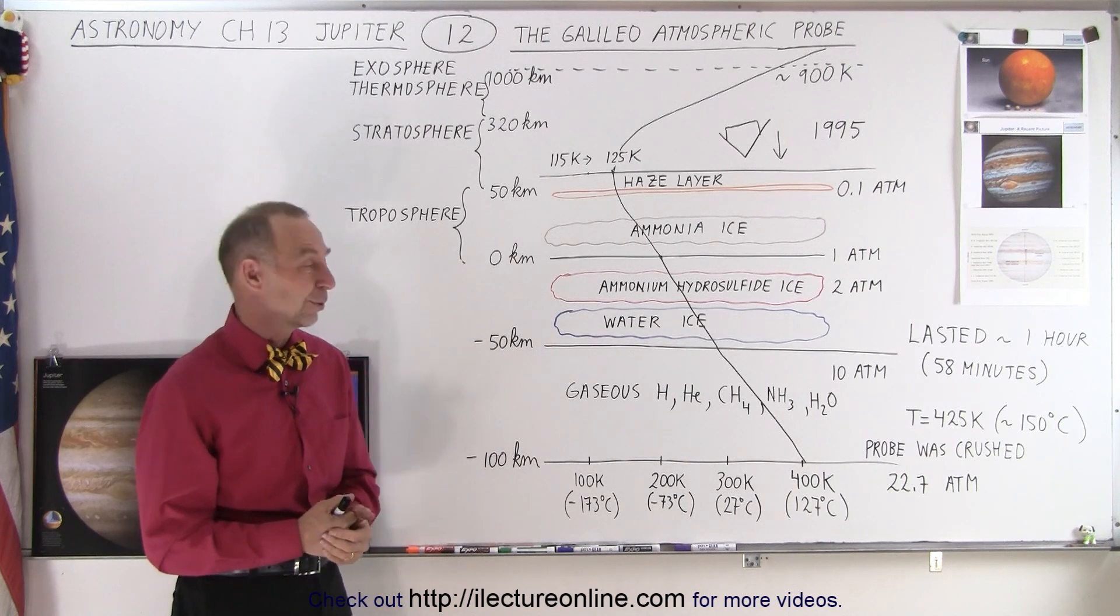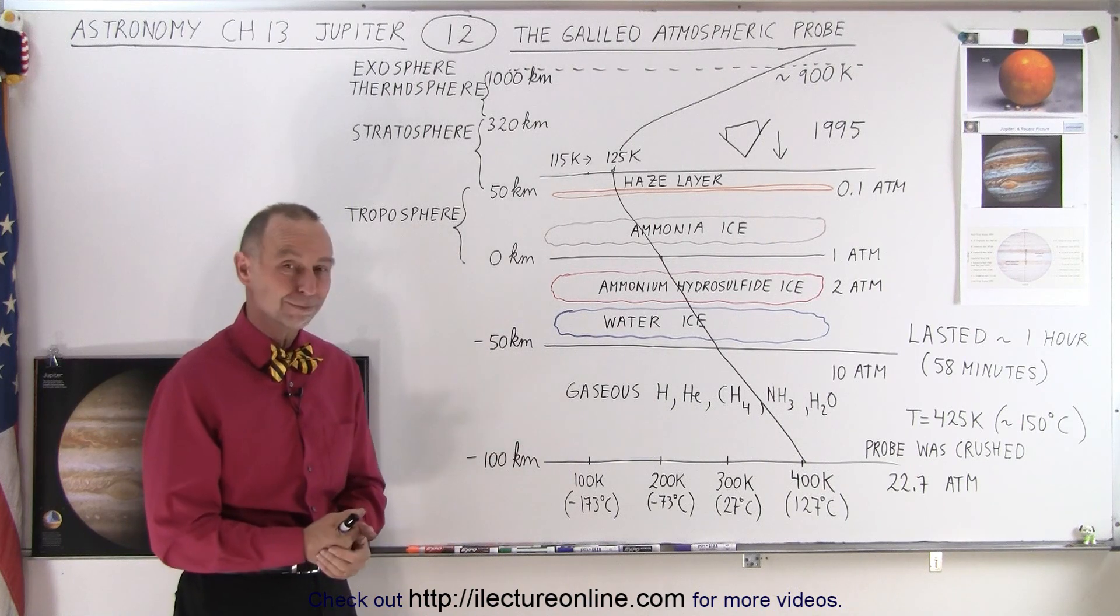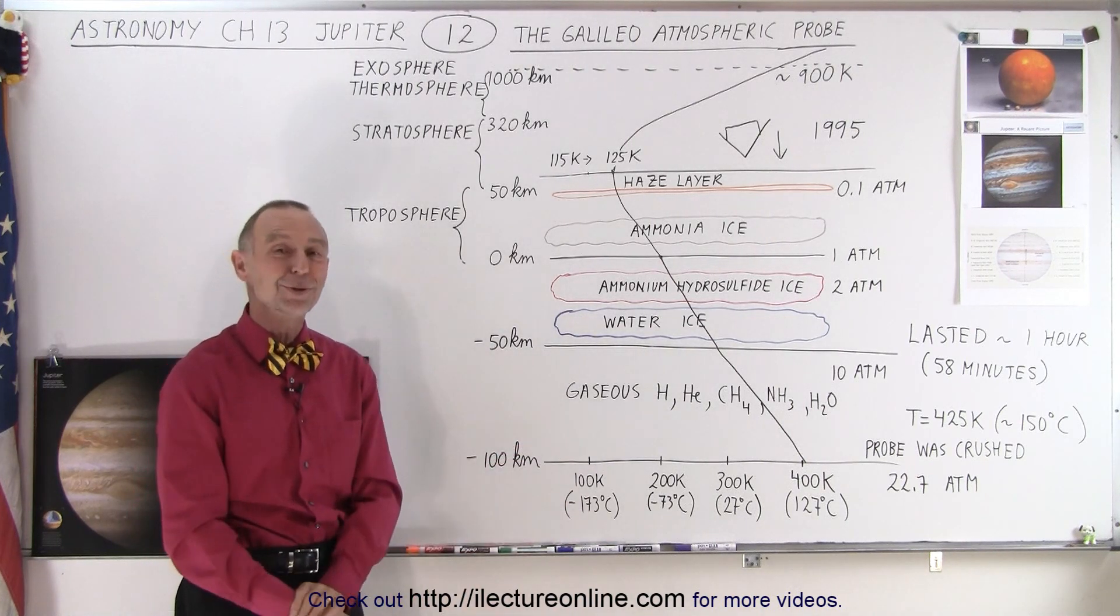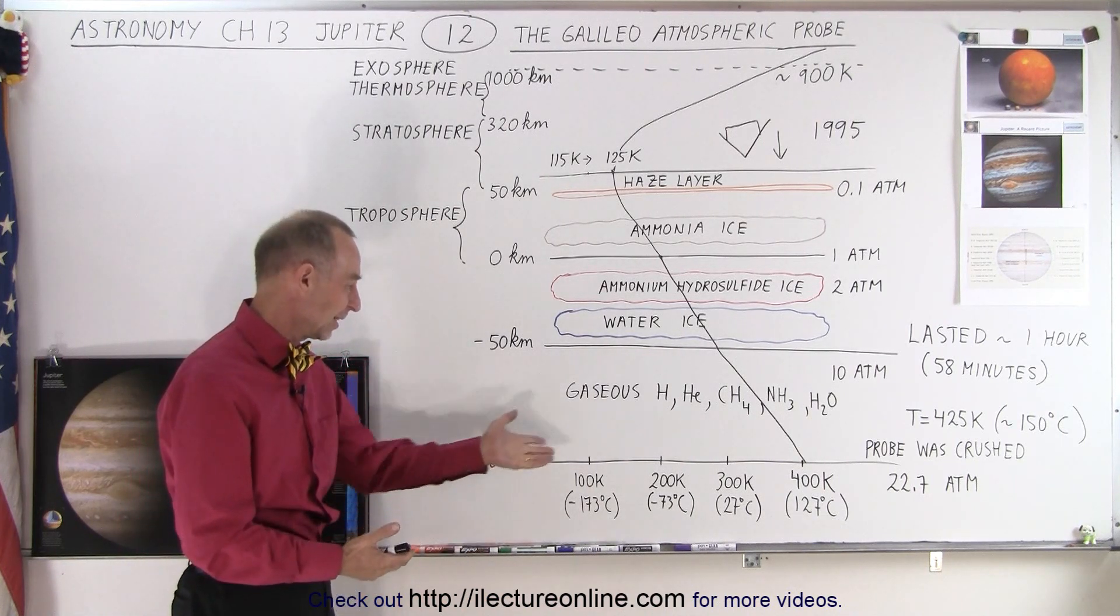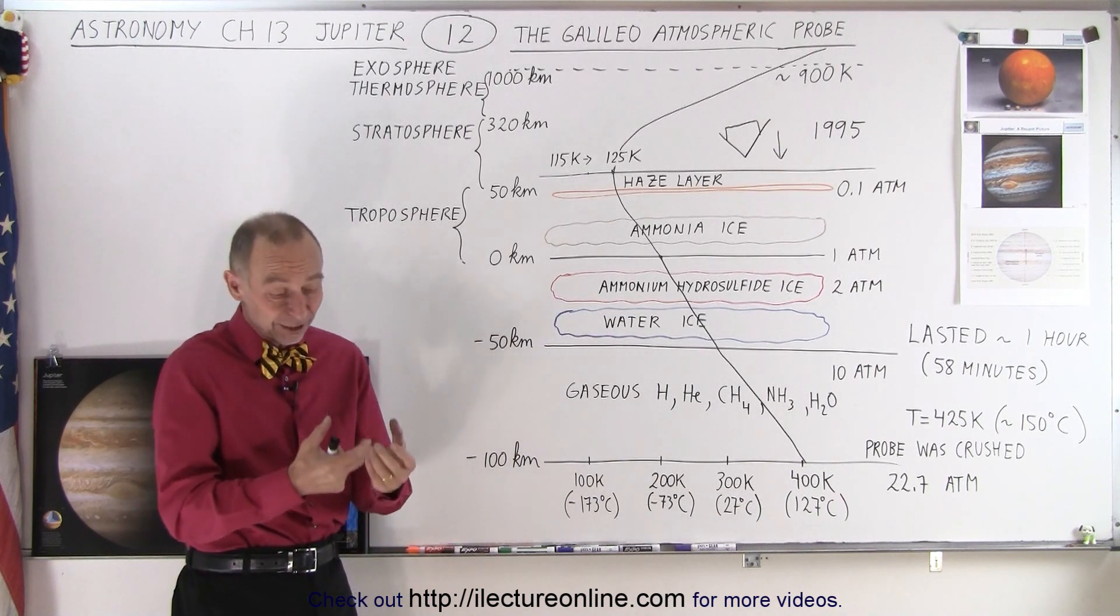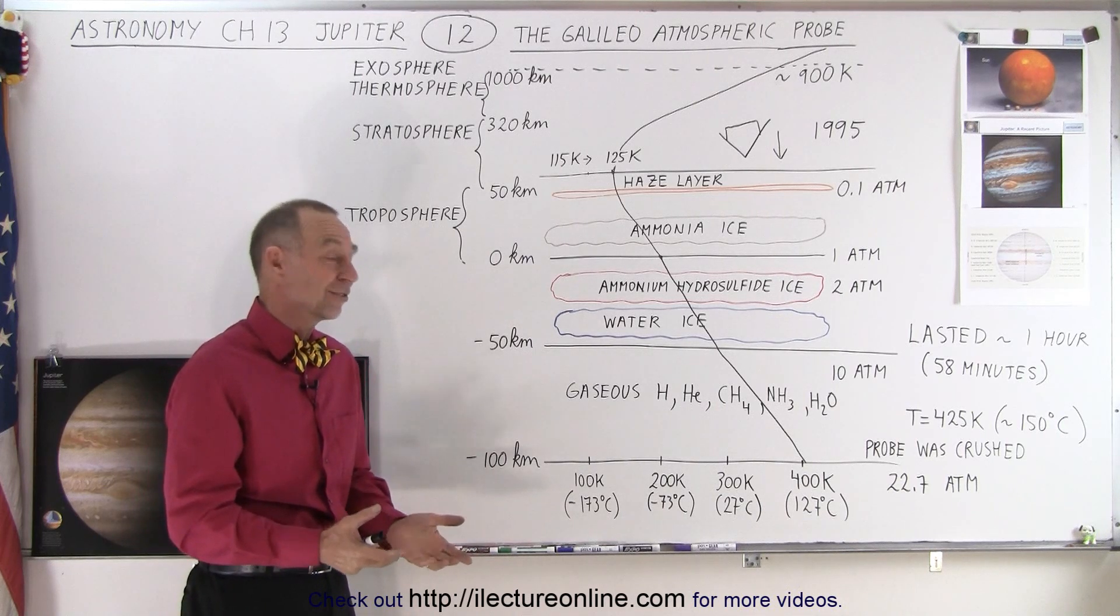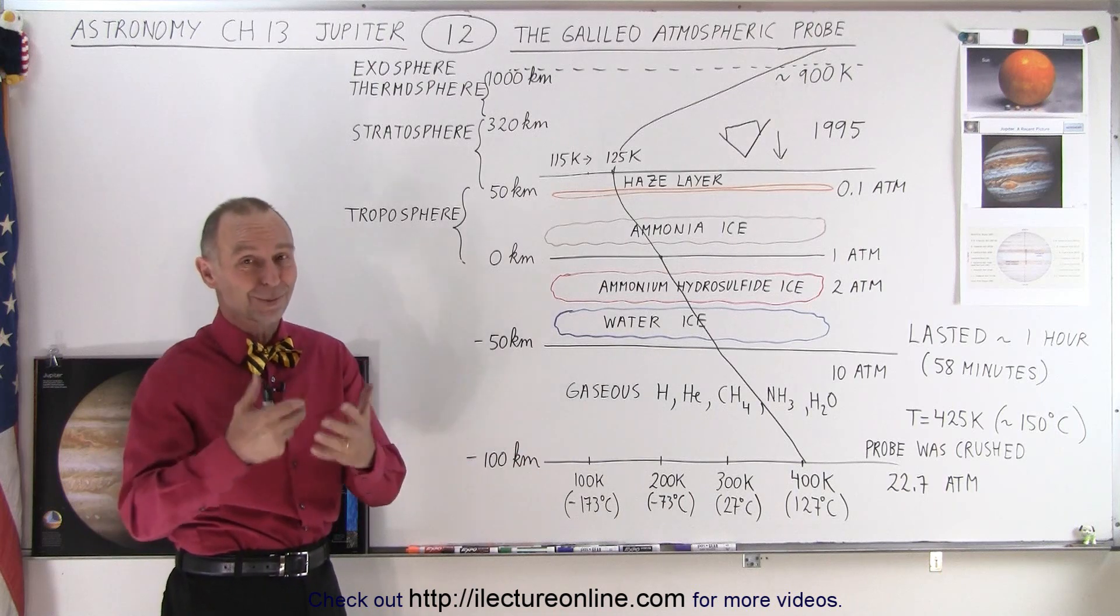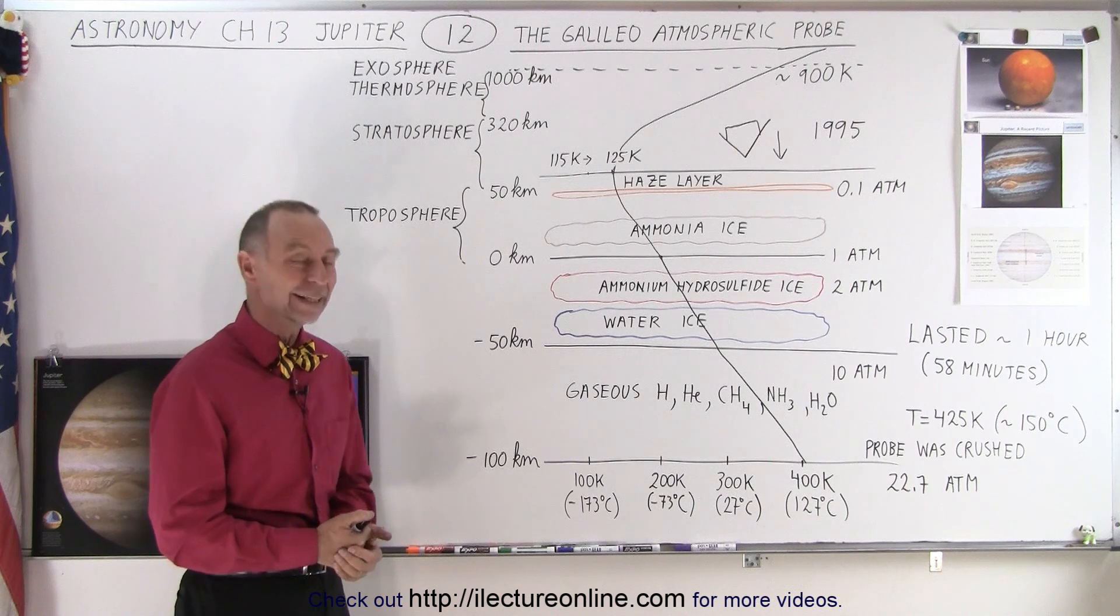So where's the probe now? It's somewhere inside Jupiter. Who knows how far down? It's made out of metal and components that are heavier than, of course, the gases that the planet is made out of. So we can probably imagine that it just continues to sink and continues to get hotter, and as it got hotter then some of the components will begin to melt. And who knows, I don't know if there's any structural remains left of that probe, but that was quite amazing that they did that.